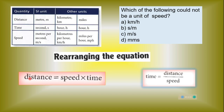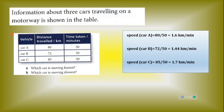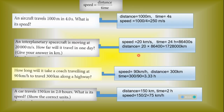We can rearrange the speed equation to find other physical quantities. Distance equals speed multiplied by time, and time equals distance divided by speed. We have information about three cars traveling on a motorway shown in a table — distance traveled and time taken. We calculate the speed of cars A, B, and C. Car C is moving the fastest and car B is moving the slowest.